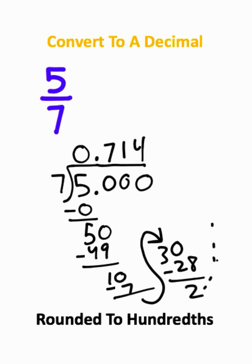Now, obviously, you could keep going from here. But we're only asked to round this to the hundredths place. This is the tenths place. This is the hundredths place. This is the thousandths place. We're asked to round this to the hundredths place.